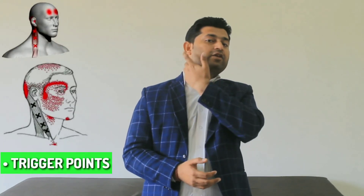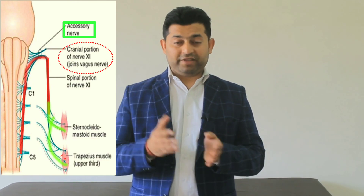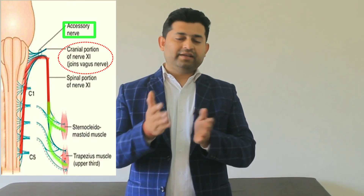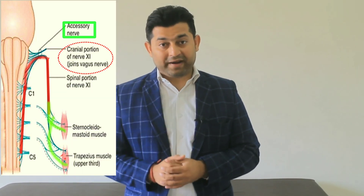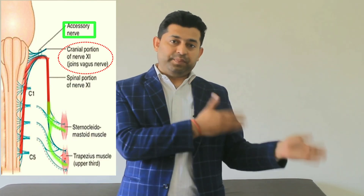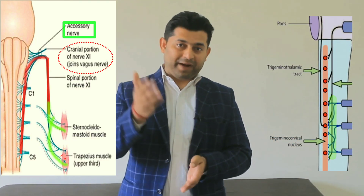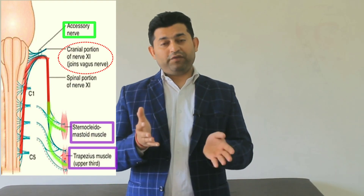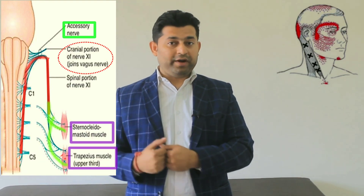Another interesting point about cervicogenic headache is that pain, dysfunction, or trigger points present in the trapezius and sternocleidomastoid muscles can also be referred as headaches. This is due to the convergence of the sensory-motor fibers of the spinal accessory nerve with the C1, C2, and C3 spinal nerves, which in turn merge at the level of the trigeminothalamic pathway, causing trigger points in these two muscles to manifest as headaches.